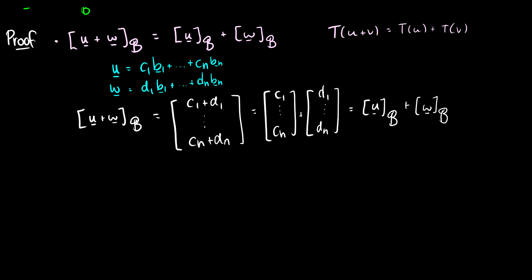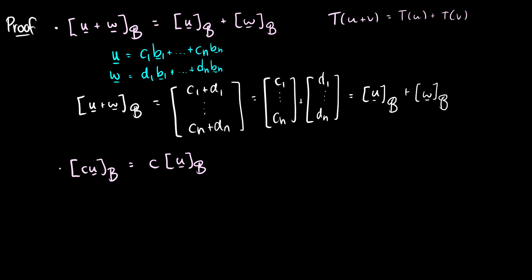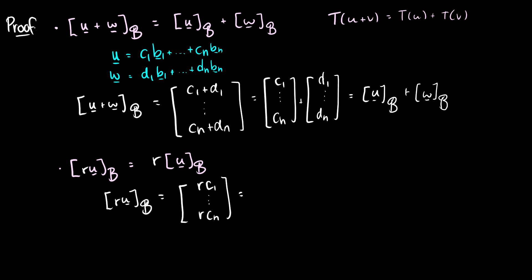The next step: for any scalar R times U relative to B, this must equal R times [U]_B. Using our U = C1·B1 + ... + Cn·Bn, we have [R·U]_B equals the vector (R·C1, ..., R·Cn). We can factor out the R, giving R times the vector (C1,...,Cn), which equals R times [U]_B. Both conditions hold, so the coordinate mapping is a linear transformation.